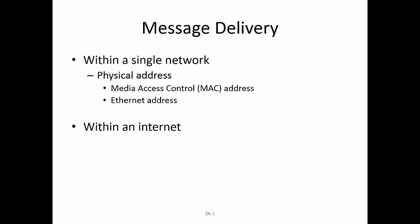Within an internet, meaning between multiple networks, once you want to go outside of your own local network and into another network, you use another type of address, which is an IP address. And within a host — meaning within a single machine, device, or computer — you use an addressing scheme called a port number. When you receive a message from another host, it still needs to go to the appropriate application running on your local host, since there could be many different applications running. So the port number indicates what application the message is going to.